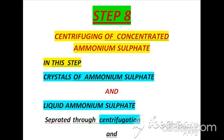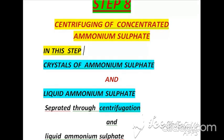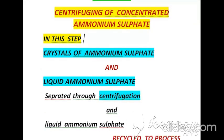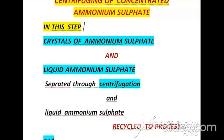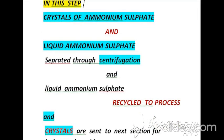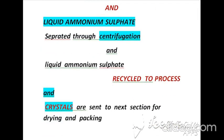According to step eight, which is centrifuging of concentrated ammonium sulphate, the crystals of ammonium sulphate and liquid ammonium sulphate are separated through centrifugation. The liquid ammonium sulphate is recycled back to the process, and the crystals are sent to the next section for drying and packing.